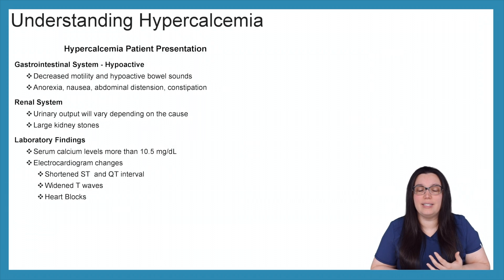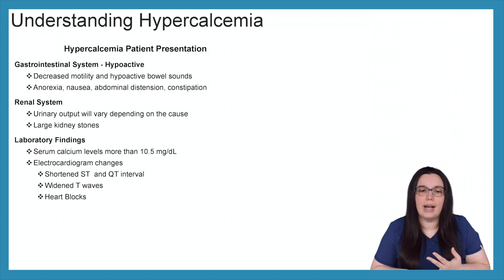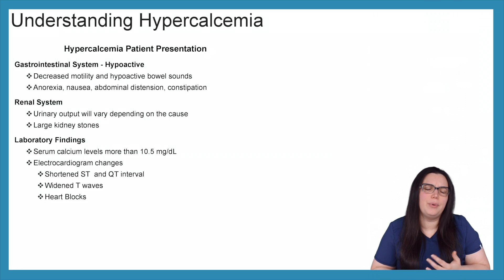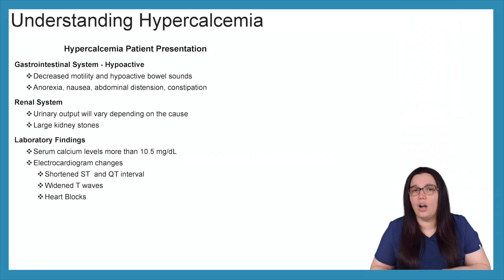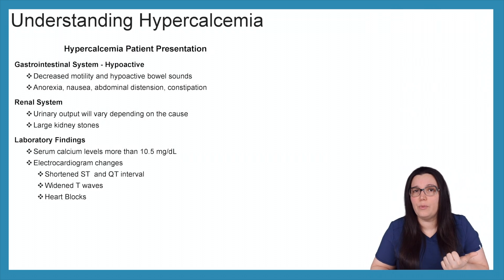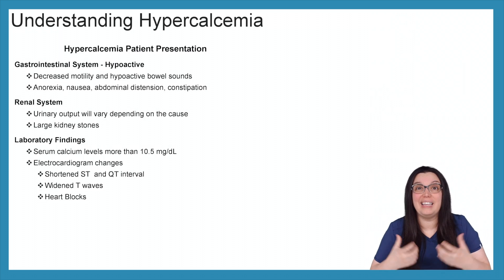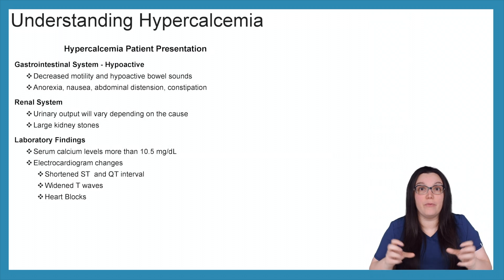When it comes to our gastrointestinal system, we're going to have very hypoactive bowel sounds — so decreased motility, hypoactive bowel sounds — and patients are going to start to experience anorexia, nausea, abdominal discomfort, as well as constipation because of that decreased motility. When it comes to our renal system, the urinary output will depend on the underlying cause of the hypercalcemia, but one thing you will see with hypercalcemia that you won't see with hypocalcemia is an increase of large kidney stones. All the excessive calcium starts to collect in those kidneys, developing kidney stones — they're very painful and extremely uncomfortable for our patients.